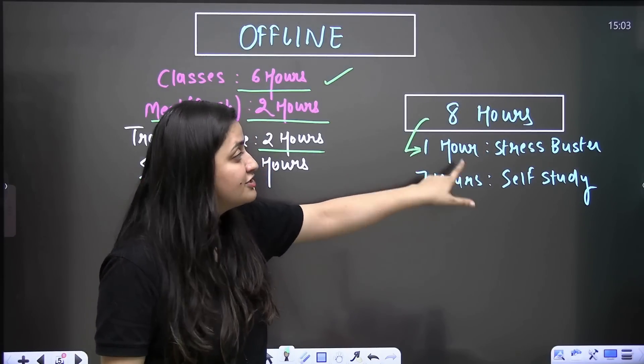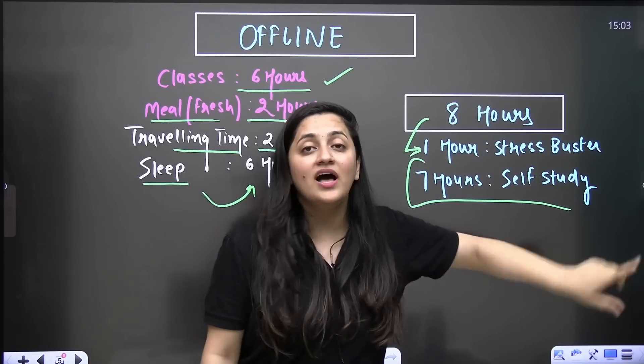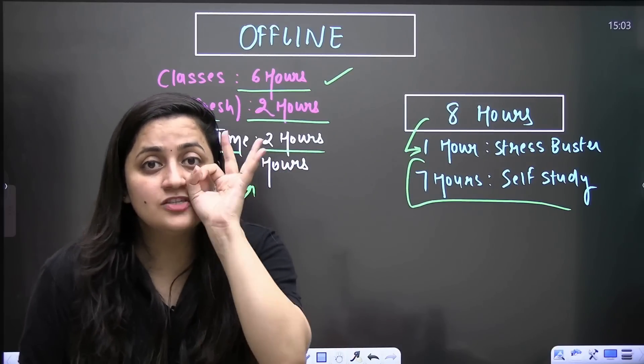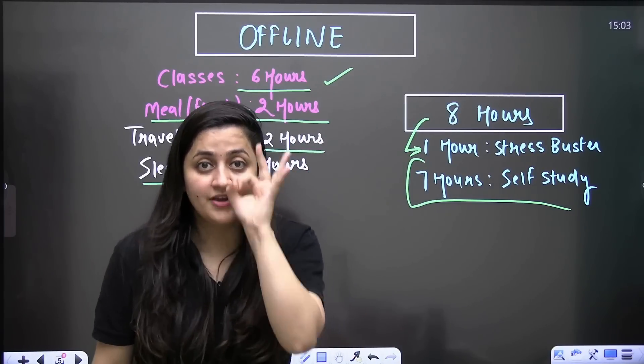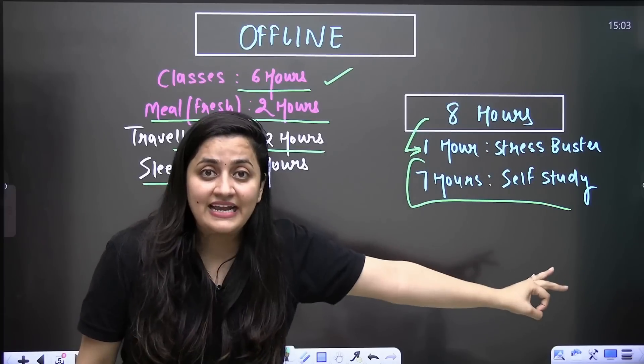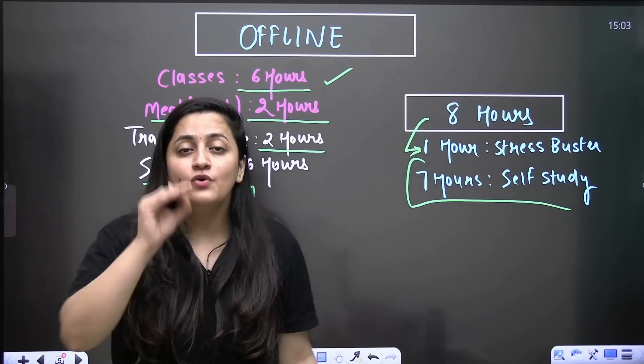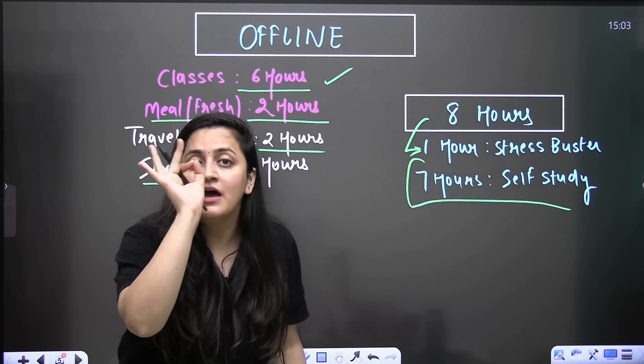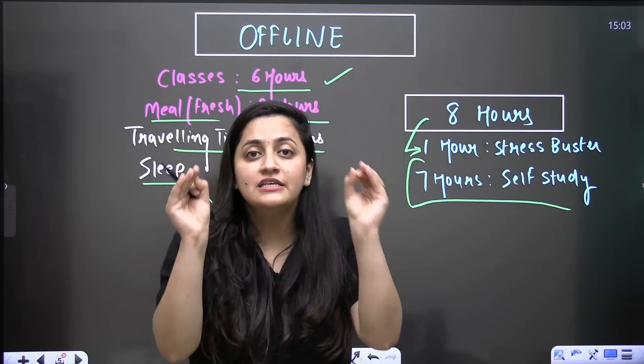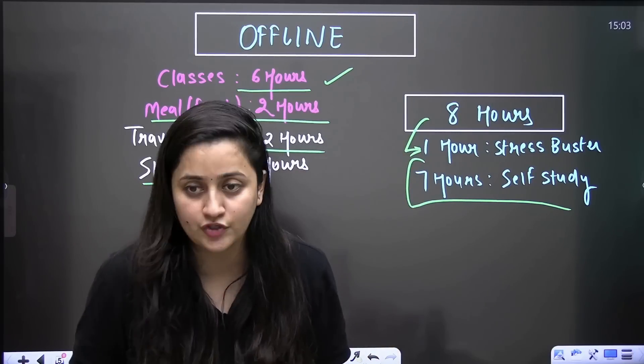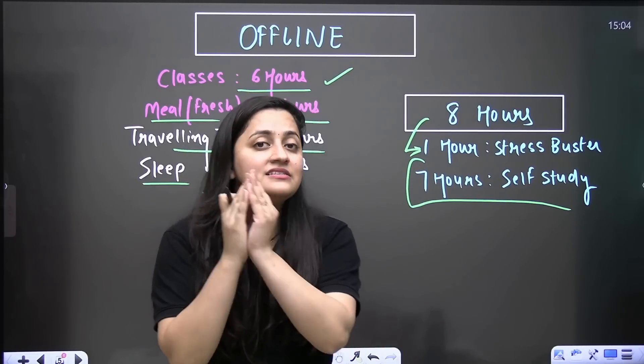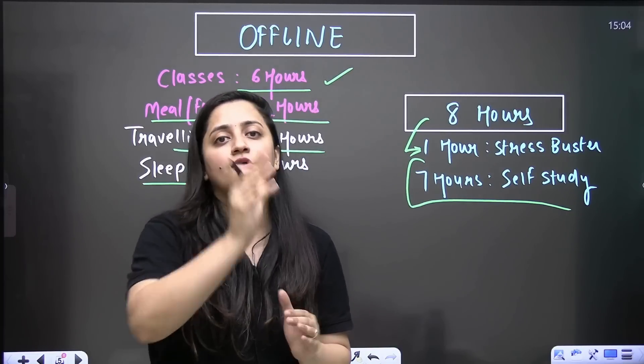Out of that one hour, you can give to your stress buster activity. Still, you have seven hours of self-study. So in these 288 days, minus 15 days, you are dedicatedly giving to your revision. You are still having 273 days. You are still having seven hours, minimum seven hours of self-study that you just need to utilize wisely. This is my analysis and I think this time is sufficient to crack your NEET examination.